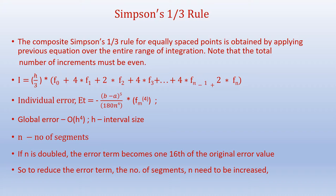The composite Simpson's one-third rule for equally spaced points is obtained by applying the previous equation over the entire range of integration. Note that the total number of increments must be even. The final form comes out as I equals h over 3 times f_0 plus 4f_1 plus 2f_2 plus 4f_3 plus so on plus 4f_{n-1} plus 2f_n.